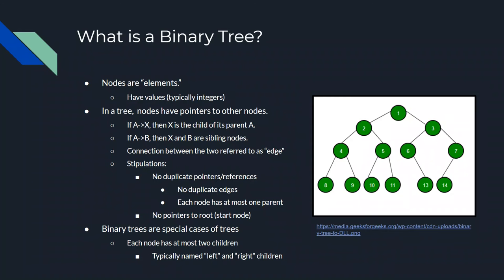In a general tree, nodes have pointers to other nodes. For example, if A points to X, if there's a connection from A to X, then we call X the child of A, or A is the parent of X. Similarly, if A has a connection to B, then B is a child of A, but now both X and B are the children of A, which means X and B are sibling nodes.